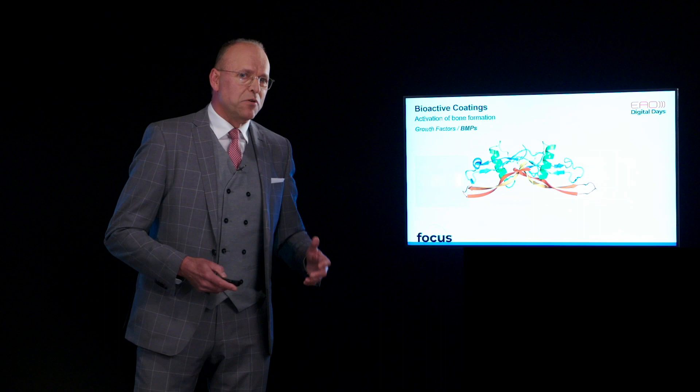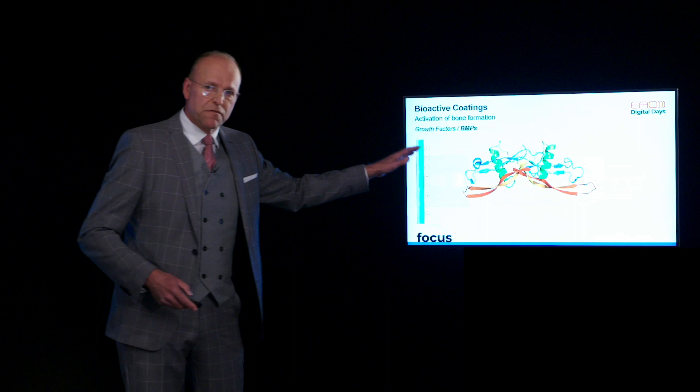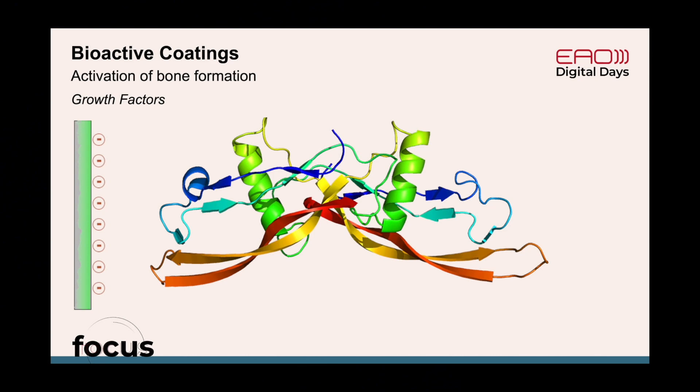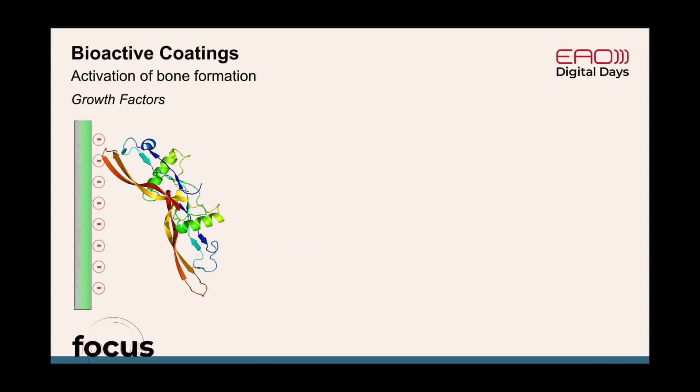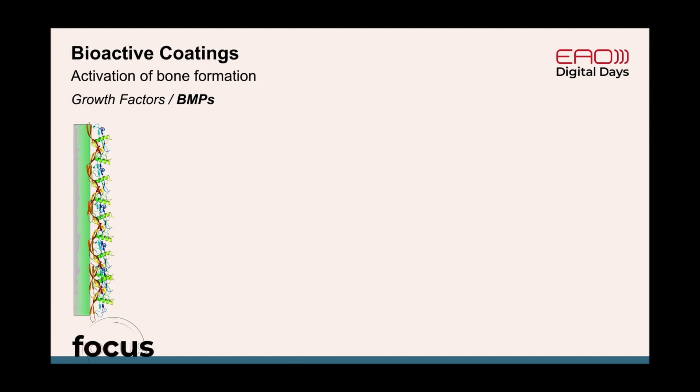The problem of using growth factors on bioactive coatings is that we want these delicately three-dimensional molecules attached to the implant surface with a kind of controlled release. The most straightforward way to coat implants with growth factors is to directly load them onto the implant surface, because this molecule has a number of positive charges that readily adsorb to the constitutionally negatively charged implant surface. When we dip an implant into a growth factor solution, the growth factor becomes absorbed to the surface. However, once the implant is placed into the body, the growth factor becomes very rapidly desorbed and the biological activity decreases rapidly within the first hours.